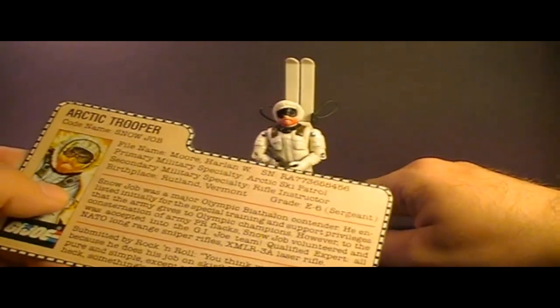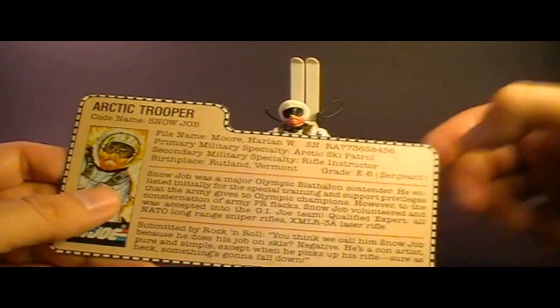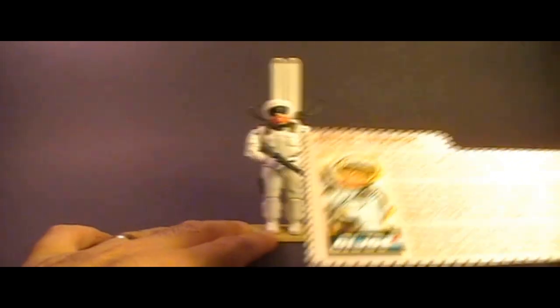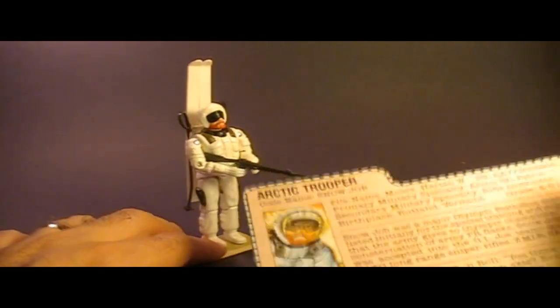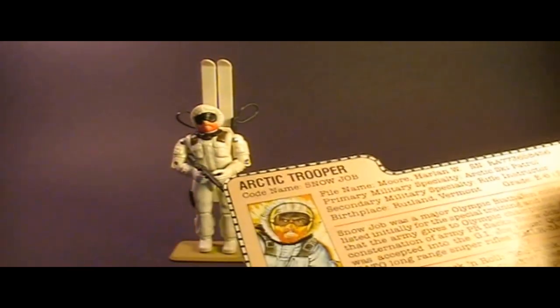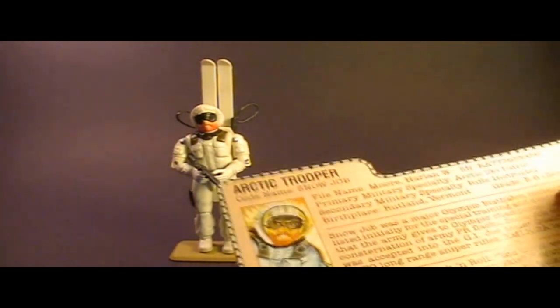The file card makes Snowjob out to be an expert marksman. And he may be considered G.I. Joe's first sniper. But if that's the case, then why not give him a sniper rifle? Maybe something with a big scope rather than this science fiction weapon laser rifle.